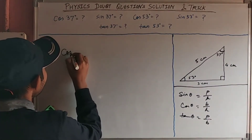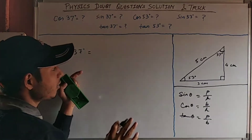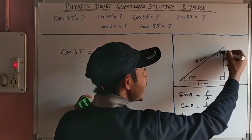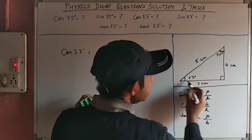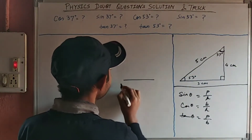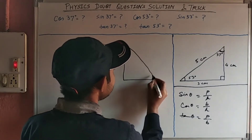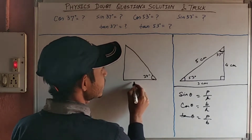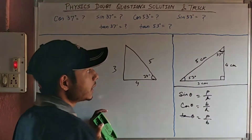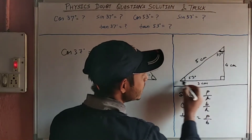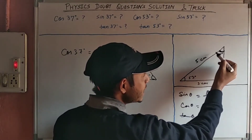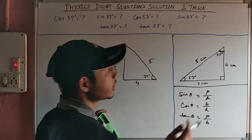Now how can we calculate values like cos 37°? See, this angle is 37°. We have to find values with respect to this angle. For the 37° angle, this side will be the perpendicular and this side will be the base. Just reverse this triangle. When reversed, this is 37°, this is 4 cm, this is 3 cm, and this is 5 cm.